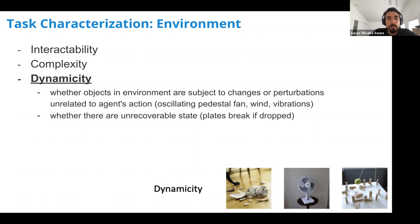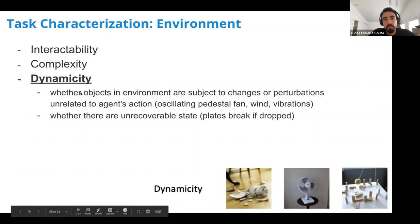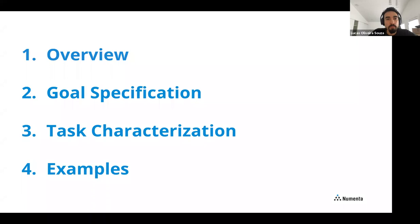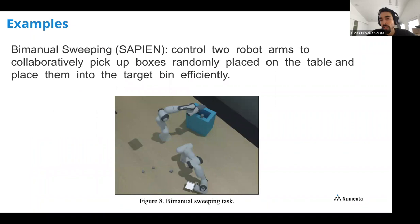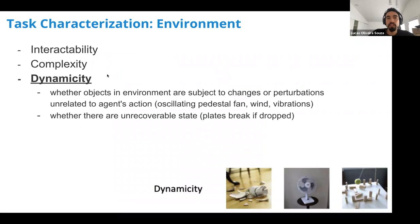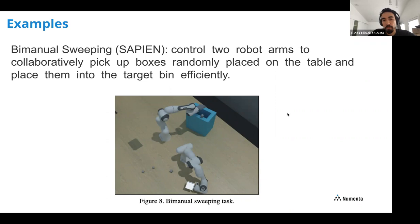Dynamicity describes whether objects in the environment are subject to changes or perturbations unrelated to the agent's actions. Examples include oscillating fans, wind, or vibrations changing things independently of the agent. The agent must learn to deal with these. There's also the question of irreversible states — if you drop a plate and it breaks, the state change cannot be recovered from, which the agent must account for.